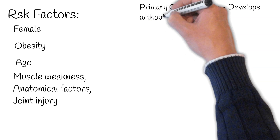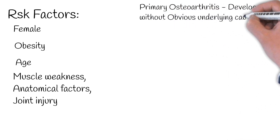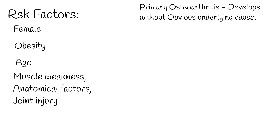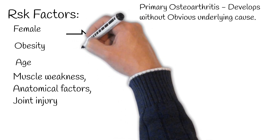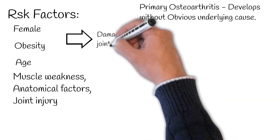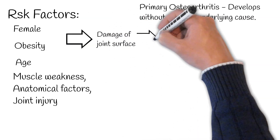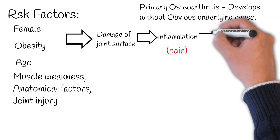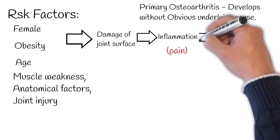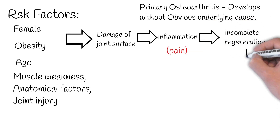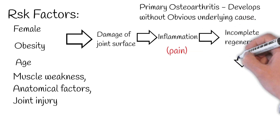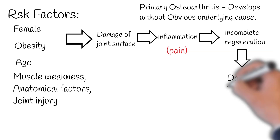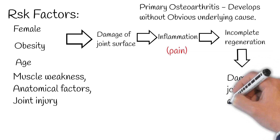When osteoarthritis develops in the absence of predisposing trauma or disease, it is called primary, but it is associated with the risk factors mentioned above. Osteoarthritis starts with microscopic damage of the joint surface, then inflammation develops. Inflammation causes symptoms such as pain. The organism tries to regenerate the damaged surface, but incomplete regeneration causes more damage to joint tissues and bone thickening, eventually leading to loss of function.